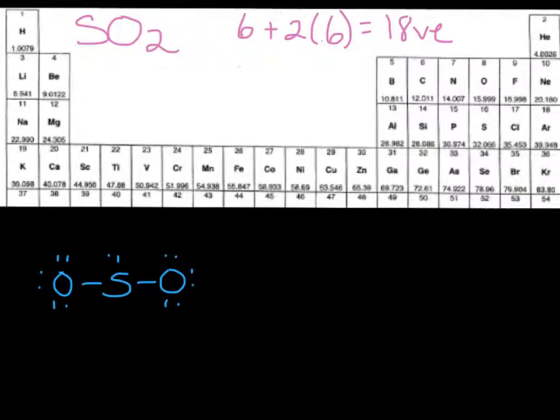Now we have an interesting issue here, because sulfur doesn't have an octet, and these oxygens, they each have an octet. So we're going to have to make one of these pairs share. Now remember, this isn't going to affect our geometry, but just to get the correct Lewis structure, let's go ahead and do this. It'll also remind us about resonance forms.